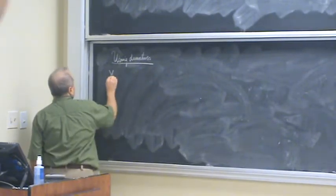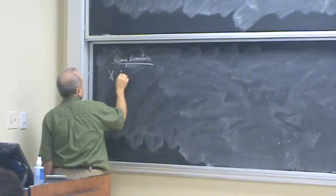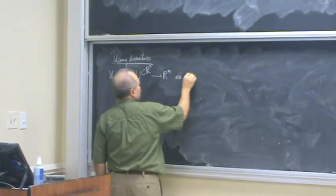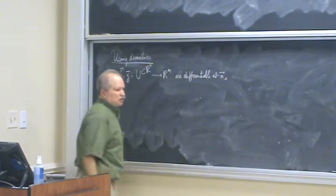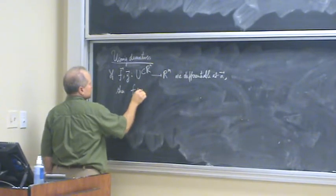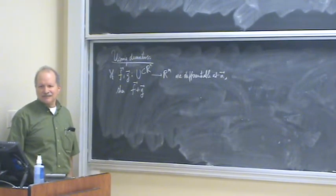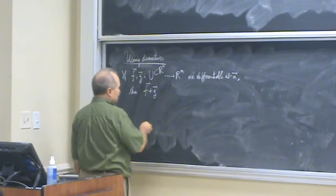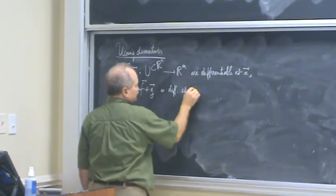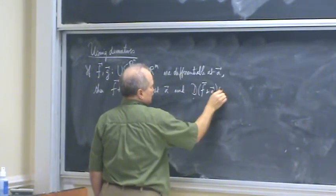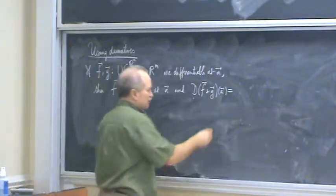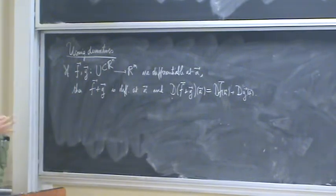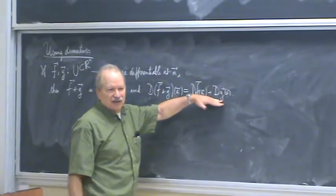So, for example, if F and G are mapping some open set of R^n to R^m and are differentiable at A, then what do you think I can say about the sum of those two vector functions? Then F plus G is differentiable at A, and the derivative of the sum is what you all think it is — the sum of the derivatives. And actually you can easily prove this from the limit definition for what it means to be differentiable.